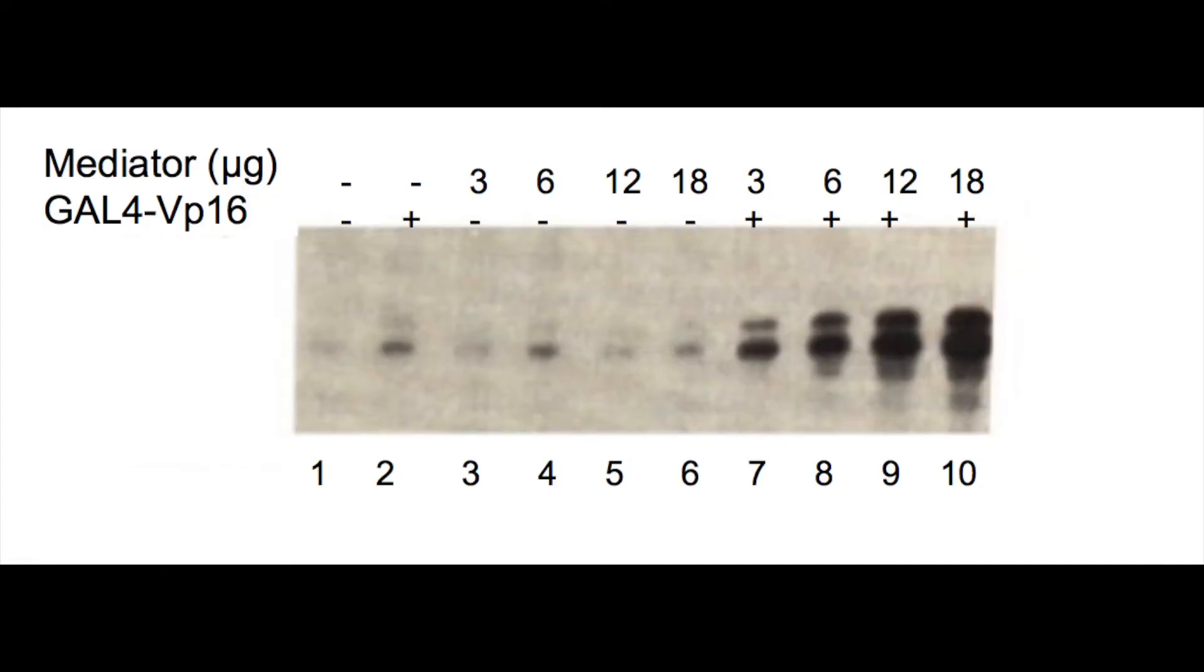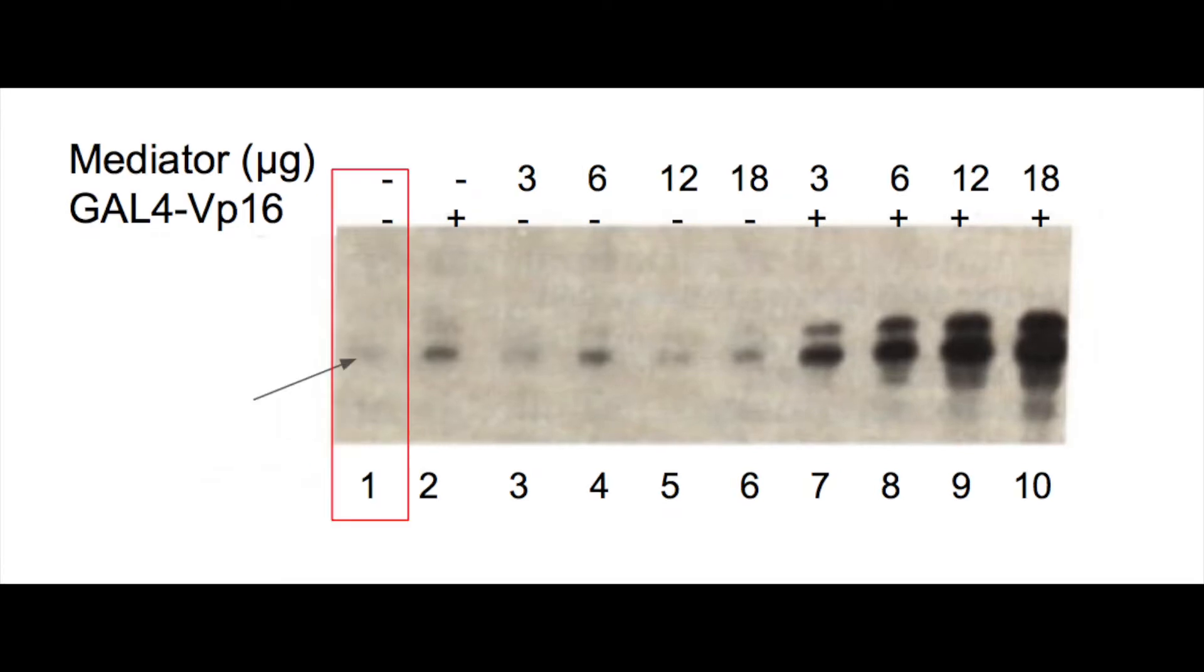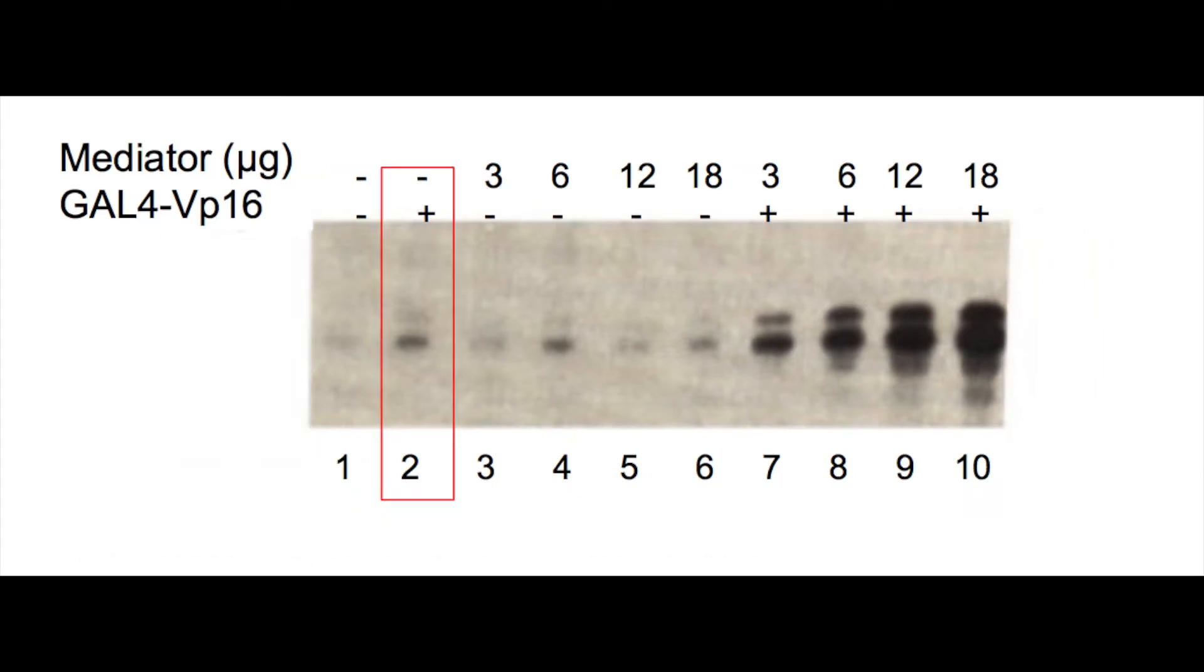Let's break this gel down, lane by lane. We can see that in lane 1, there was no activator nor mediator present in the transcription reaction. A faint band on the gel, which is difficult to see, indicates that a basal level of transcription occurred. Looking at lane 2, we can see a much darker band, which indicated that more RNA products were made in this reaction. Lane 2 shows that addition of the activator increased transcription.